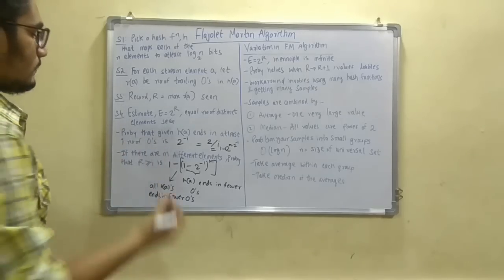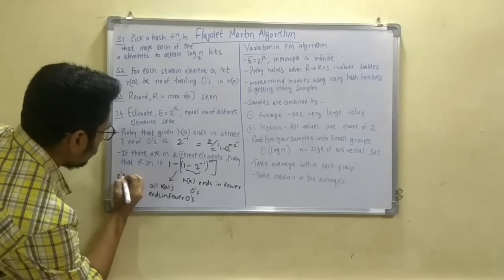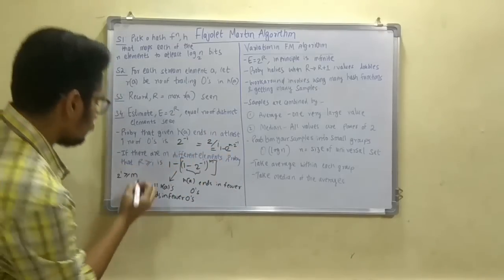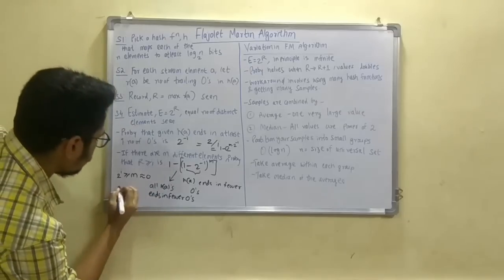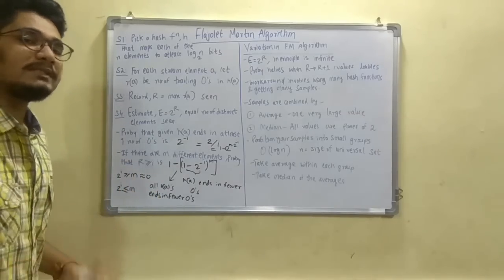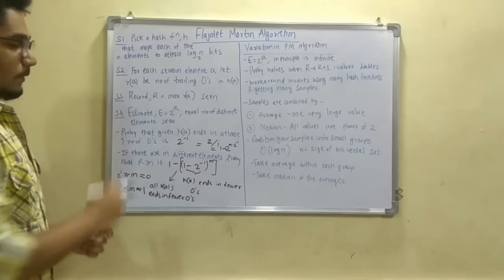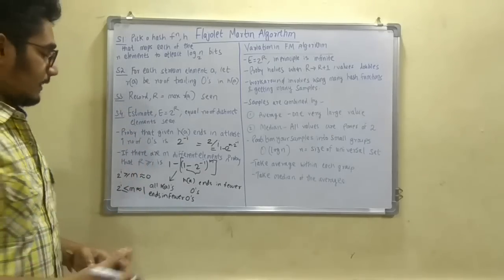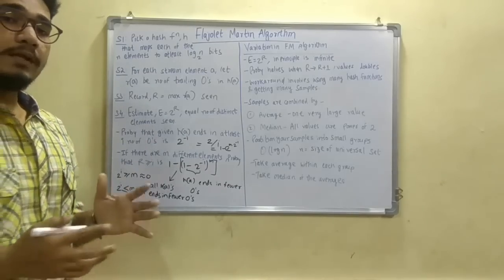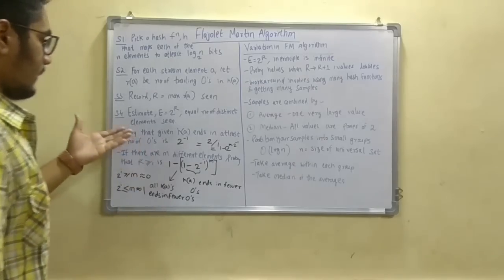For demonstration, if 2 raised to minus i is very much greater than m, then this expression evaluates to 0, and if 2 raised to i is very much less than m, then this evaluates to 1. This is the probability distribution for calculating the various values while solving the problem. There is one variation involved in the FM algorithm: the estimate E equals 2 raised to R.